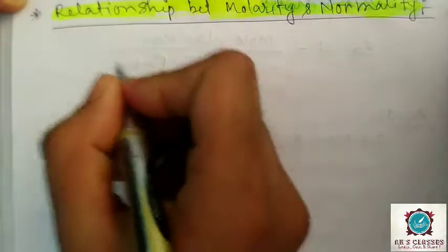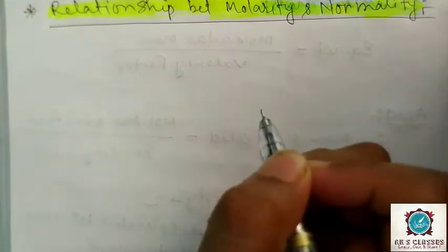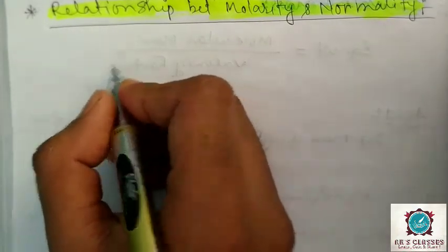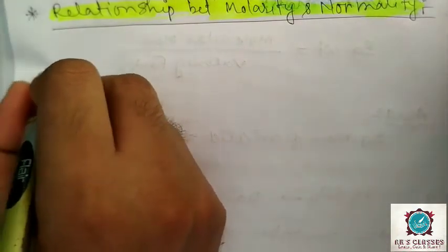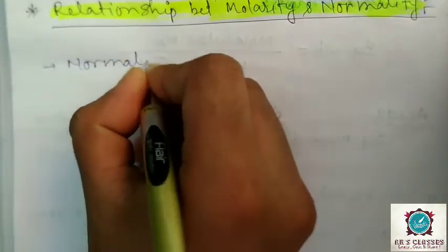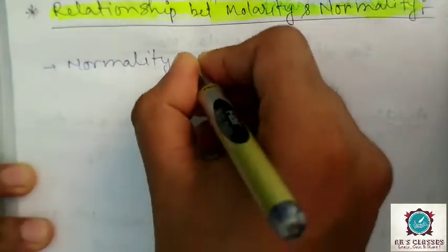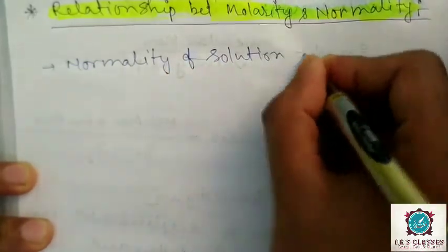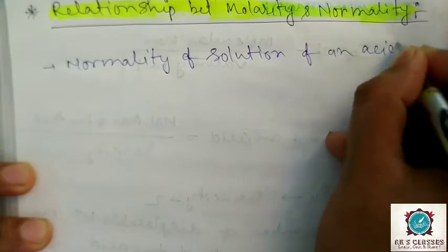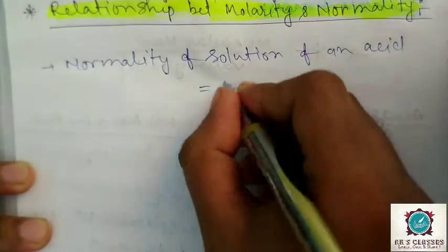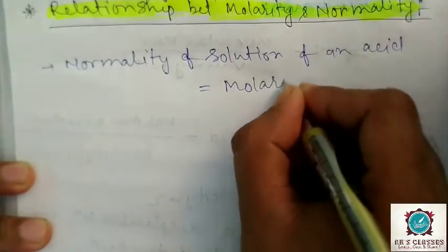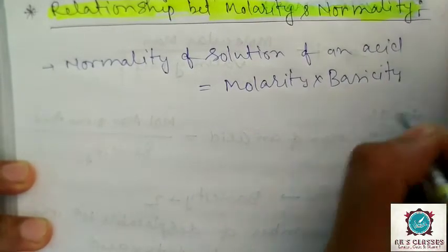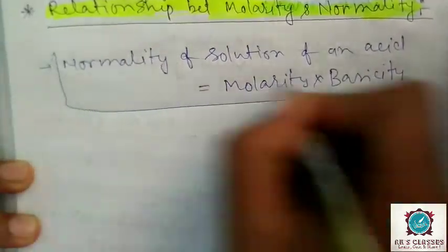Today we will discuss the relationship between molarity and normality. For an acid, normality is equal to molarity multiplied by basicity. Basicity means the number of displaceable hydrogen ions.